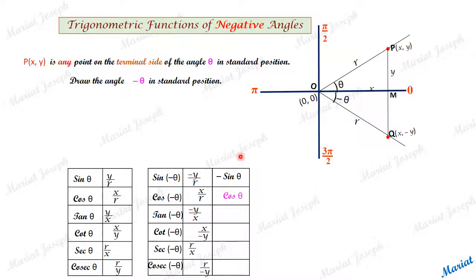Similarly, cos minus theta is equal to cos theta already discussed. Tan minus theta is minus tan theta. Cot minus theta is minus cot theta. Sec minus theta, observe here, r by x and r by x, they are same. So sec theta and sec minus theta will be equal. Cosec minus theta is equal to minus cosec theta.